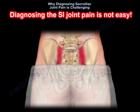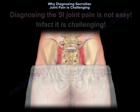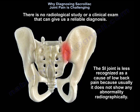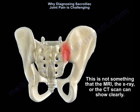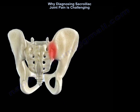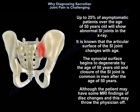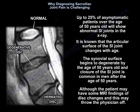Diagnosing sacroiliac joint pain is not easy; in fact, it is challenging. There is no radiological study or clinical exam that can give us a reliable diagnosis. The sacroiliac joint is less recognized as a cause of low back pain because it usually doesn't show any abnormality radiographically — this is not something that MRI, X-ray, or CT scan can show clearly. Up to 25% of asymptomatic patients over the age of 50 will show abnormal sacroiliac joints on X-ray. The articular surface changes with age; the synovial surface begins to degenerate by age 50, and closure of the SI joint is common in men after age 50. This may throw the physician off when MRI findings of disc changes are also present.